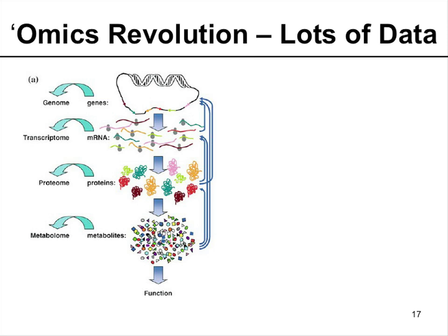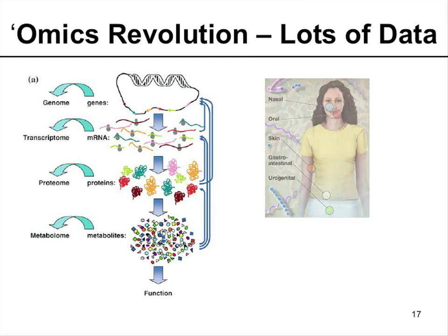The conceptual framework here is that when we're talking about omics, we're talking not only about the gene potential, but all the way through to the metabolites that are there. And this is just the bugs. Then there's us. And those may interact.